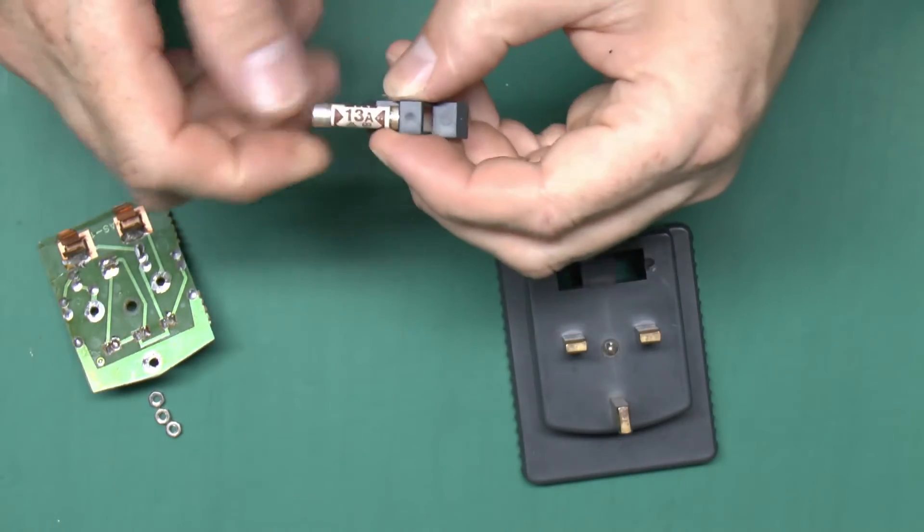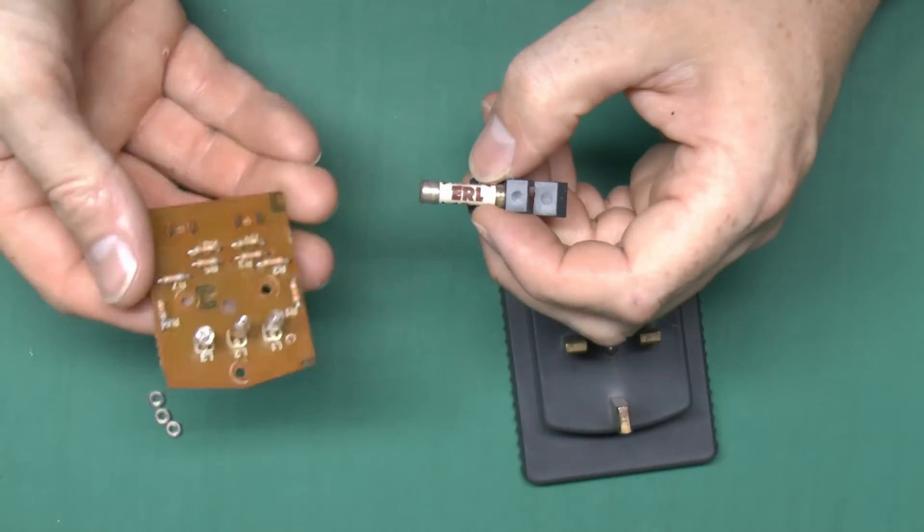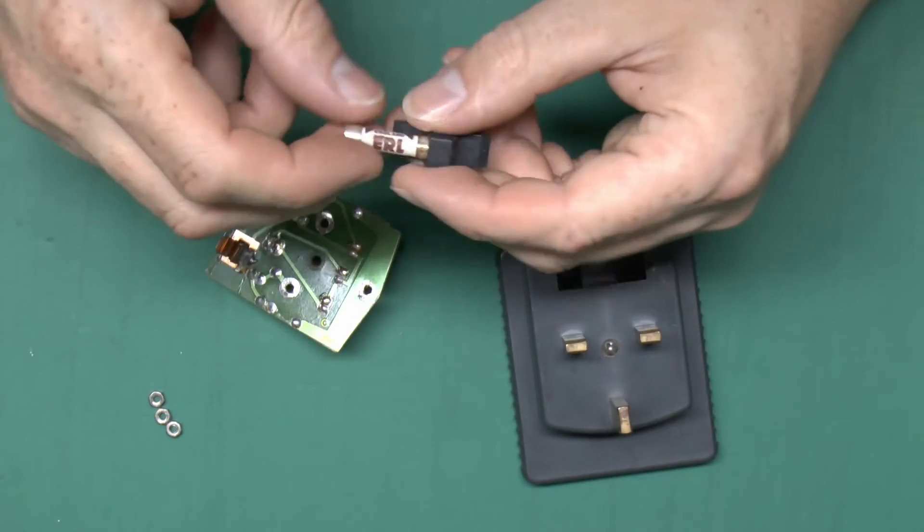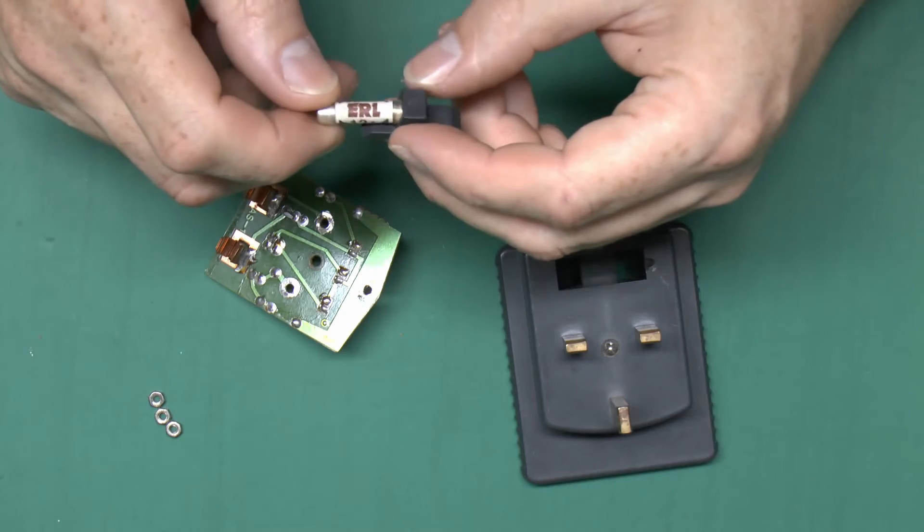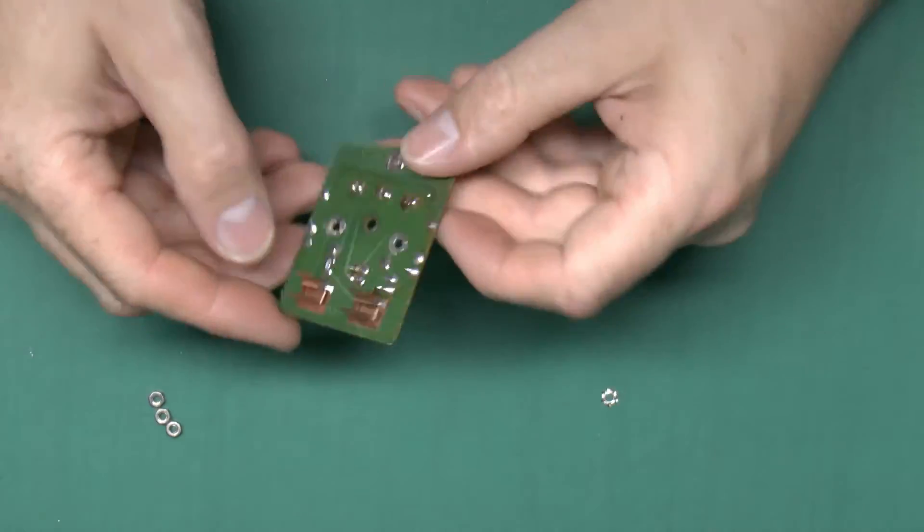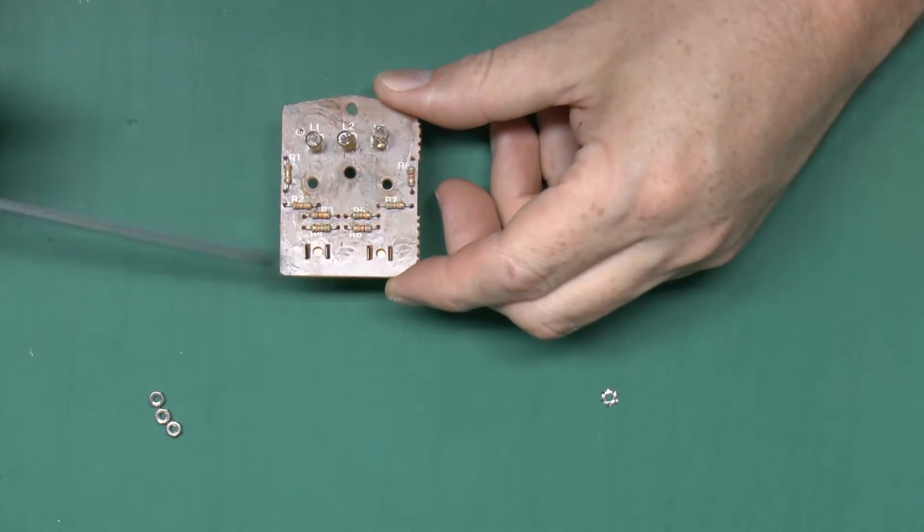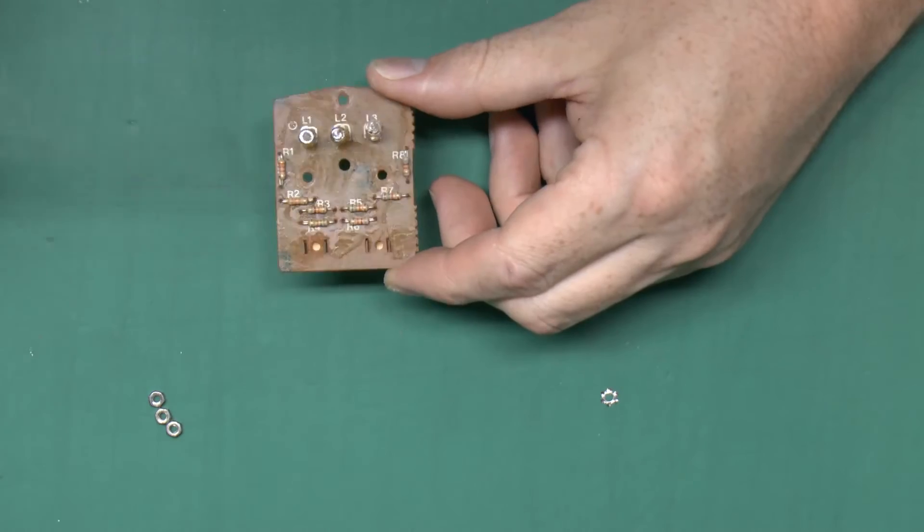Quite well this has a 13 amp fuse in is a mystery, there's no way this is going to need anything like 13 amps or even 0.13 amps, so there we go, ERL, whoever they may be. So all we've got here is just say the three neon indicators and a number of resistors there.